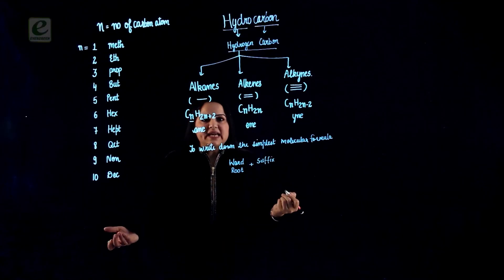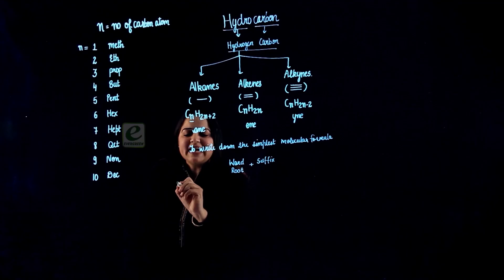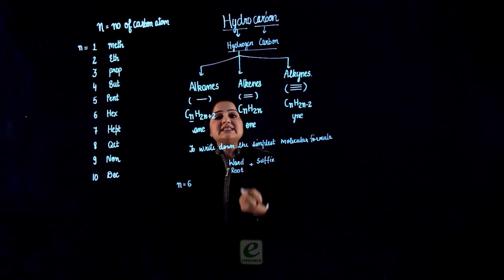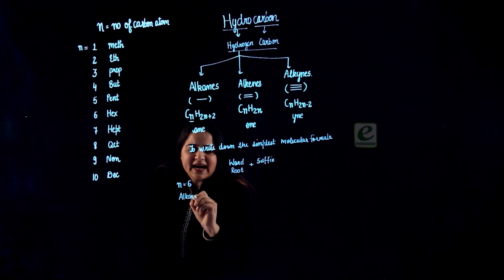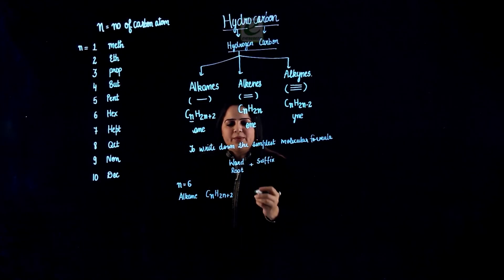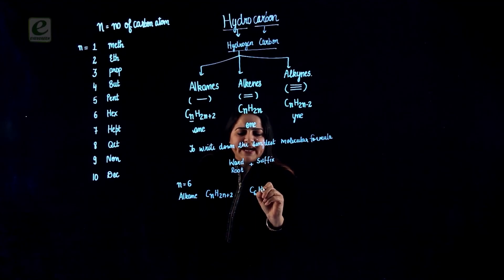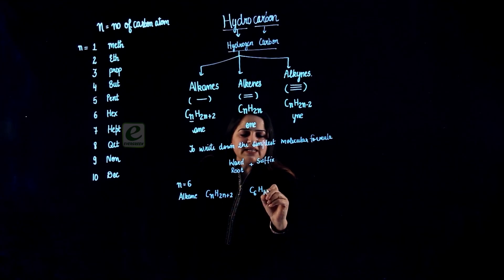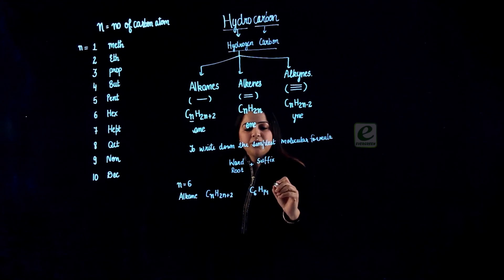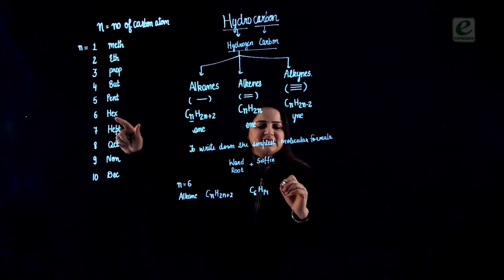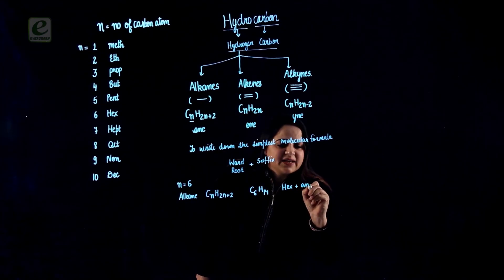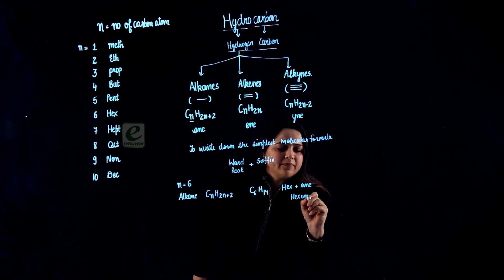For example, if I say my hydrocarbon has got 6 carbon atoms, that means N refers to 6. And if I say it is an alkane, alkane gives me the formula CnH2n+2. Now I will put the value 6 here and get C6H. 2 into 6 is 12, 12 plus 2 is 14. So the molecular formula I derive is C6H14. The word root if N equals 6 is hex. Since it was alkane, I use the suffix -ane. So my compound will be given the name hexane.